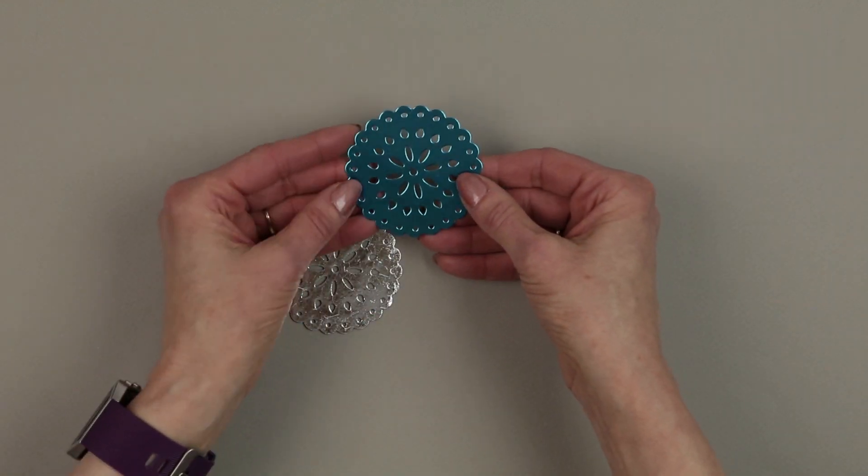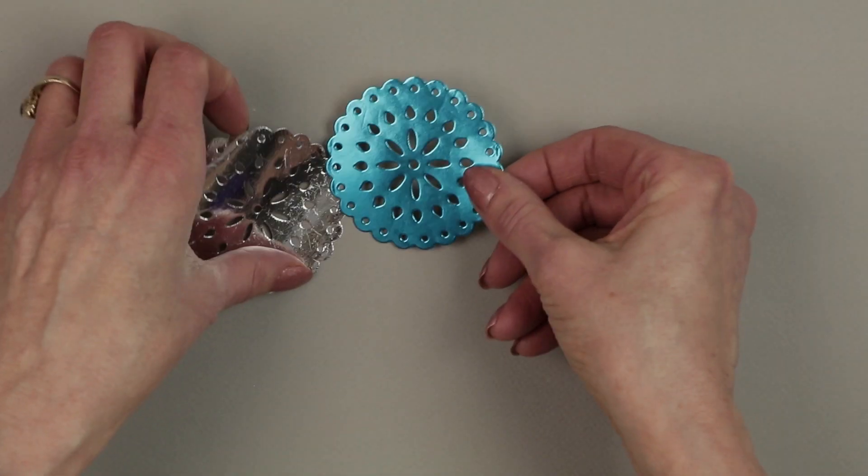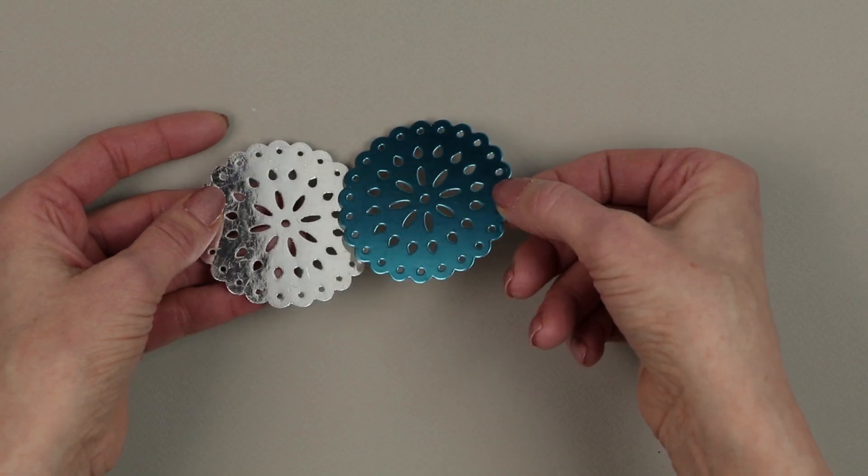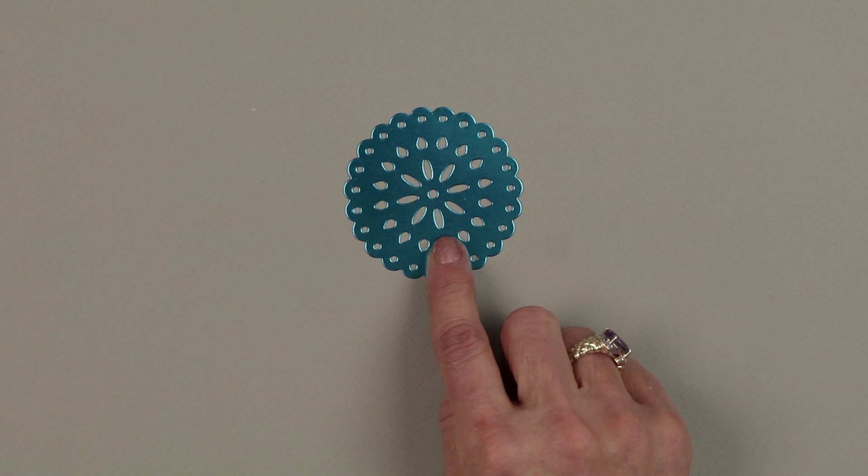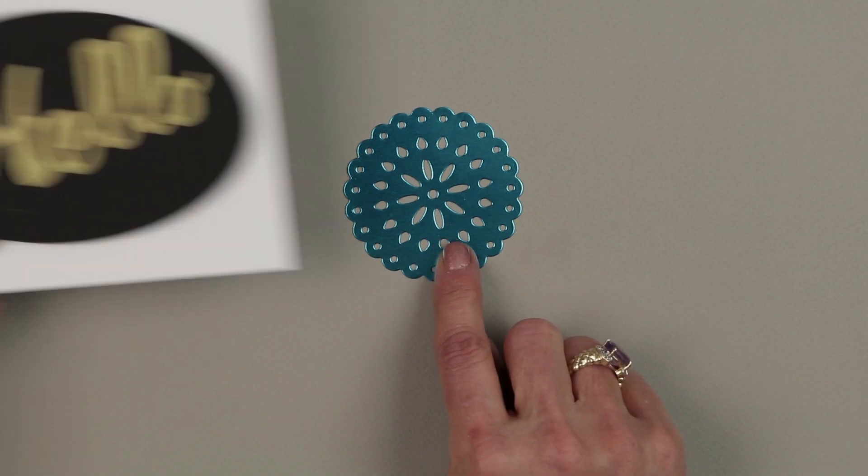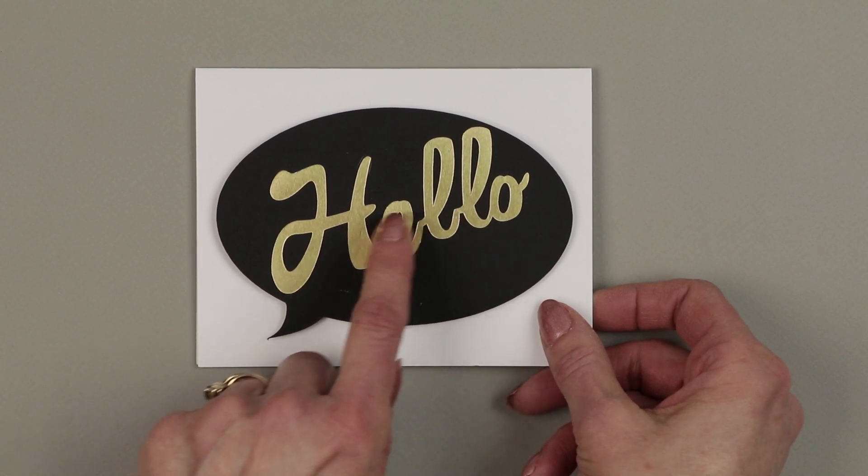This is what I consider to be perfect, perfect foiling. There you can see the hammered and there you can see how smooth and detailed it is. That's the look I'm after.